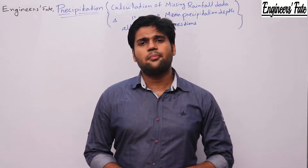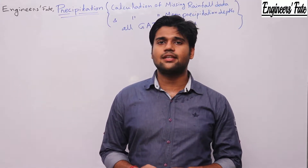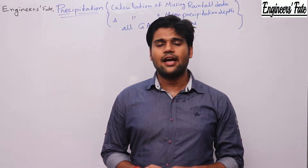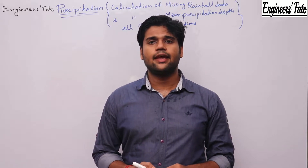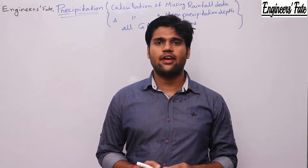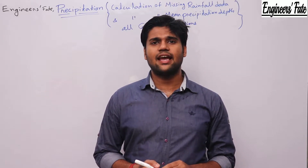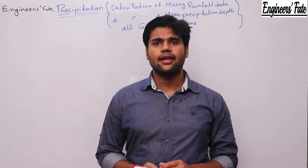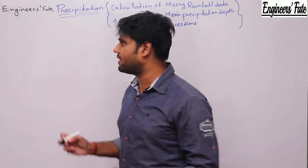In the previous video I told you what an isohyet is. An isohyet is a line joining equal rainfall values, or an isohyet is a line joining equal rainfall depth. Let's write that.